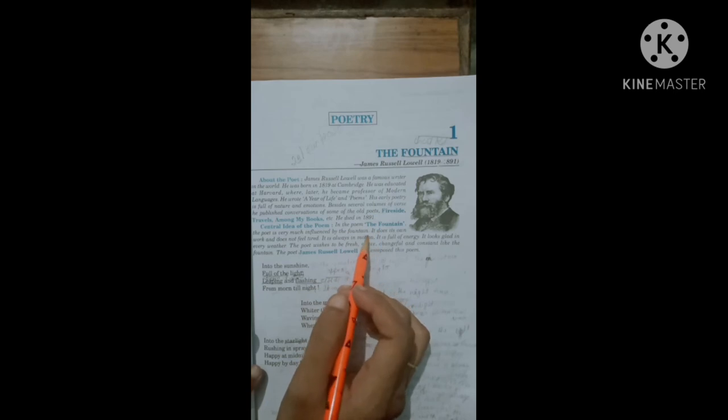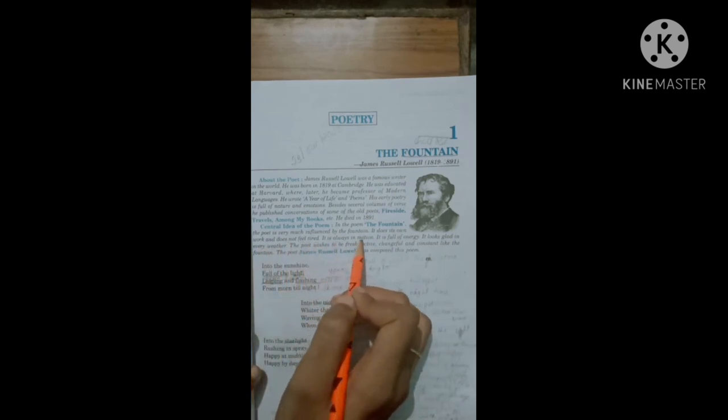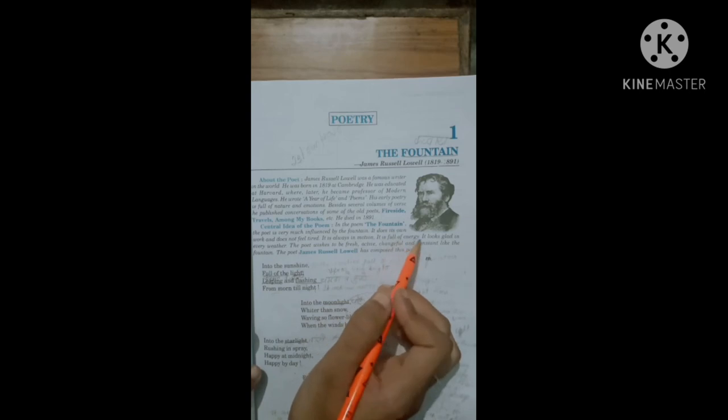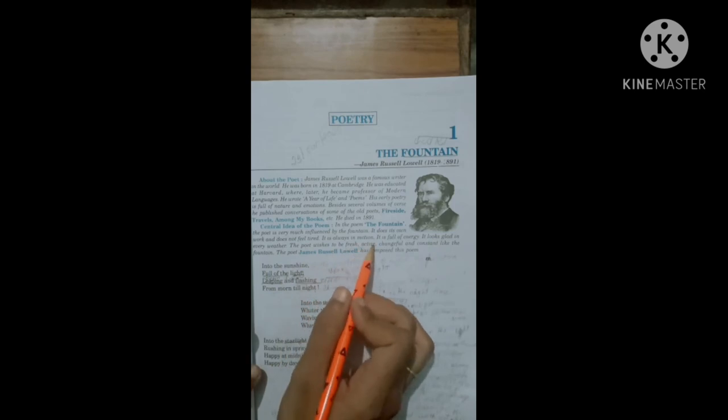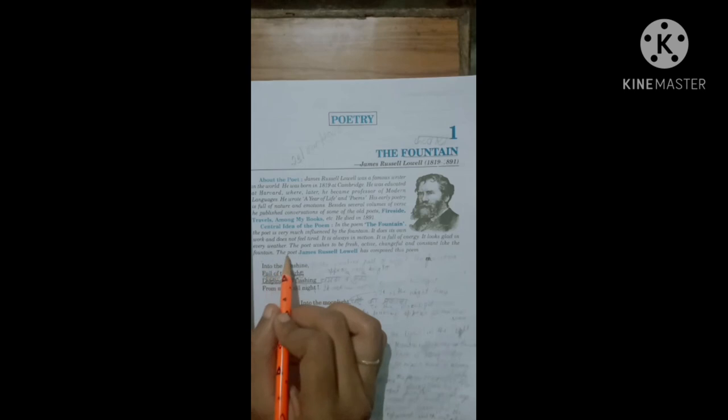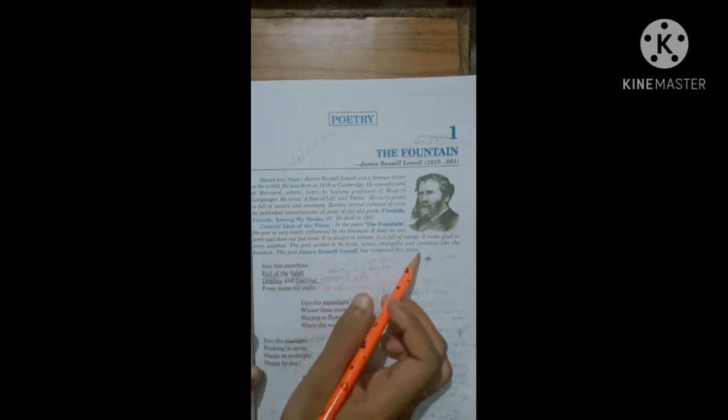It does its own work and does not feel tired. It's always in motion, it is full of energy, it looks glad in every weather. The poet wishes to be fresh, active, changeful and constant like the fountain. The poet James Russell Lowell has composed the poem. Now we will learn the Hindi meaning.